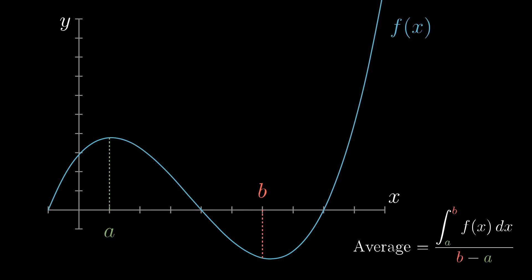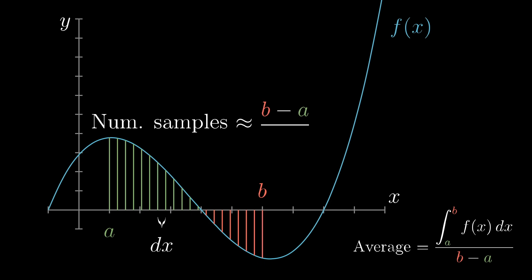When you take some sample of points spaced out by dx, the number of samples is about equal to the length of the interval divided by dx. So if you add up the values of f at each sample and divide by the total number of samples, it's the same as adding up the product f times dx and dividing by the width of the entire interval.